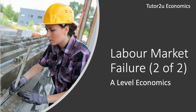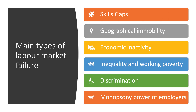Hi there. Welcome to the second in our series of videos on labour market failure. In the first video we looked at four examples of market failure including skills gaps, geographical and mobility of labour, economic inactivity and inequality and working poverty. In this video we'll take a look at discrimination and also the increasingly topical issue of monopsony.